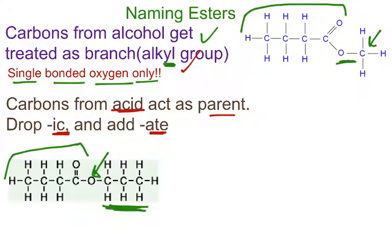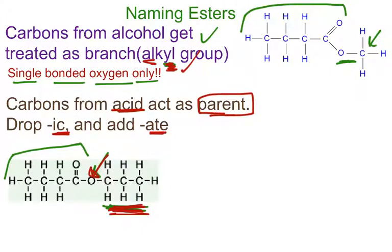We know from experience that the parent name always goes in the back, and the alkyl group goes in the front. I like to do the alkyl first. On this molecule, I see a single-bonded oxygen, so I know these carbons came from the alcohol and I treat them as an alkyl group. I have three carbons, so I look at my reference table — that refers to 'prop.' Since I'm treating it as an alkyl group, it gets a -YL ending: propyl.